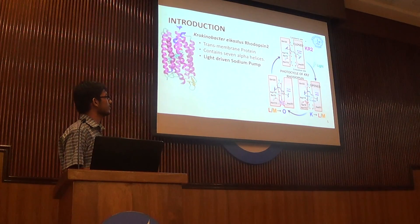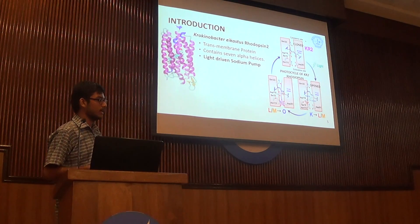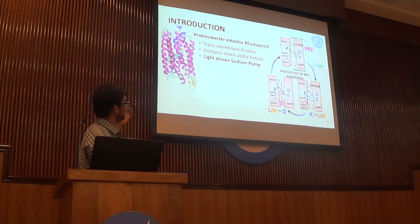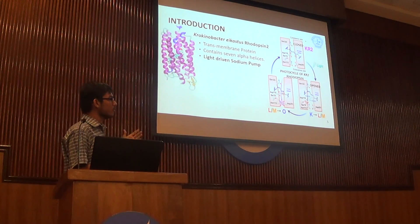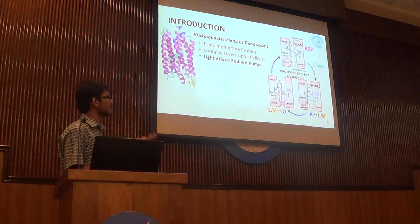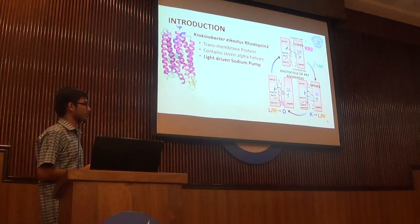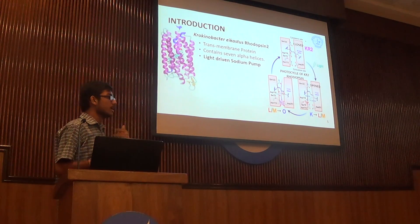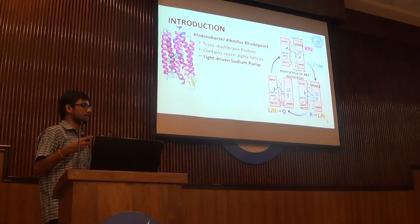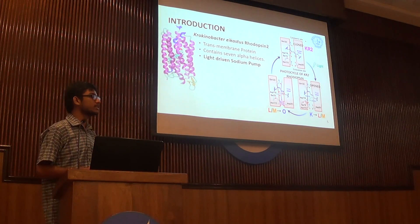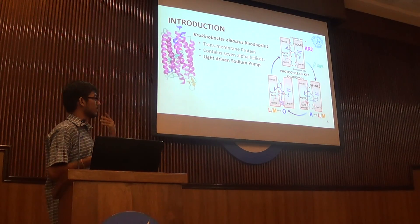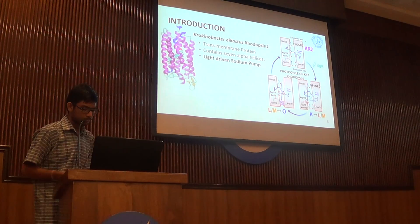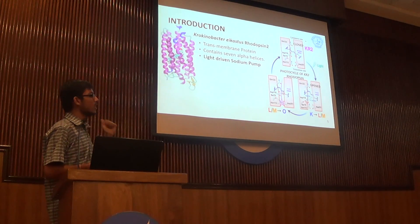Let us look at how the photo cycle of this rhodopsin works, as it will help in the later part of the talk. Initially, the retinal is present in an all-trans form in the closed KR2 state. After absorbing a photon, a photoisomerization takes place, giving rise to 13-cis retinal. This change in conformation of a single molecule leads to a series of conformational changes in the protein, giving us the open structure and thereby allowing water to move in together with the ions. We call this the KL open state.